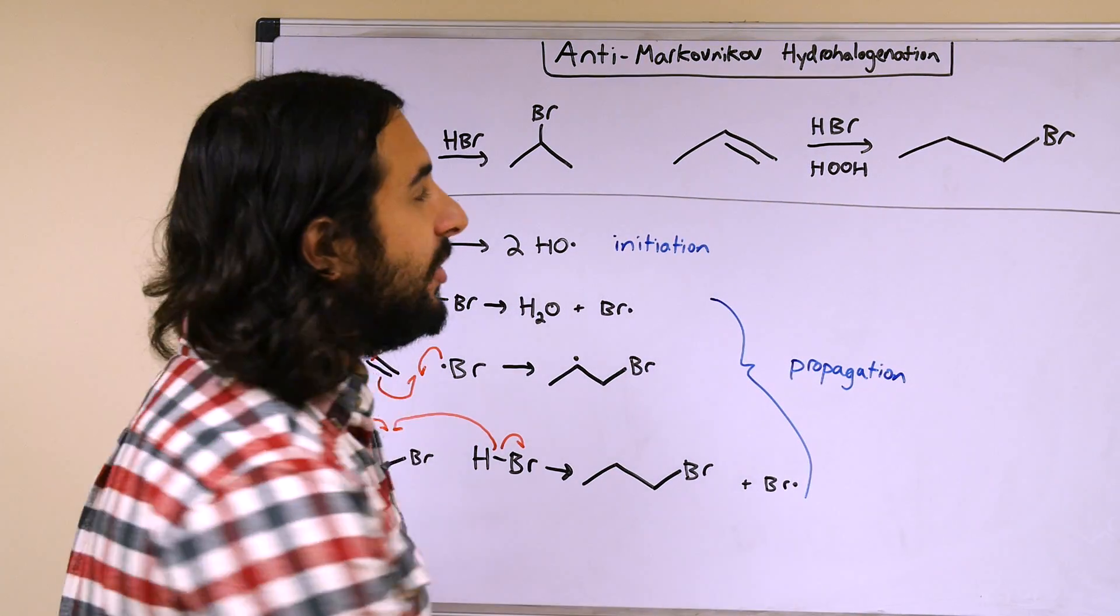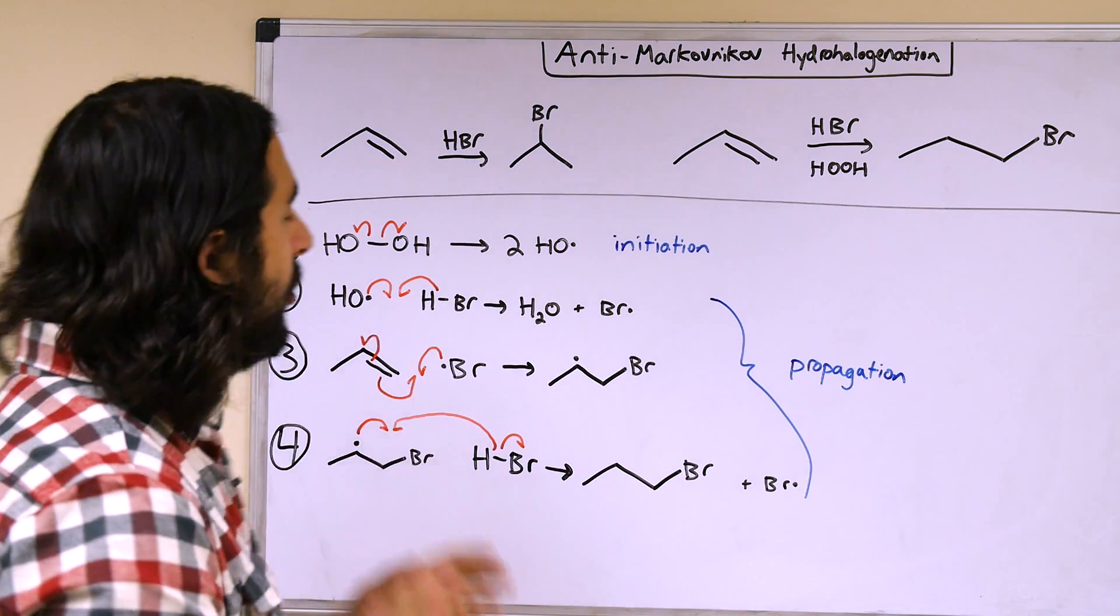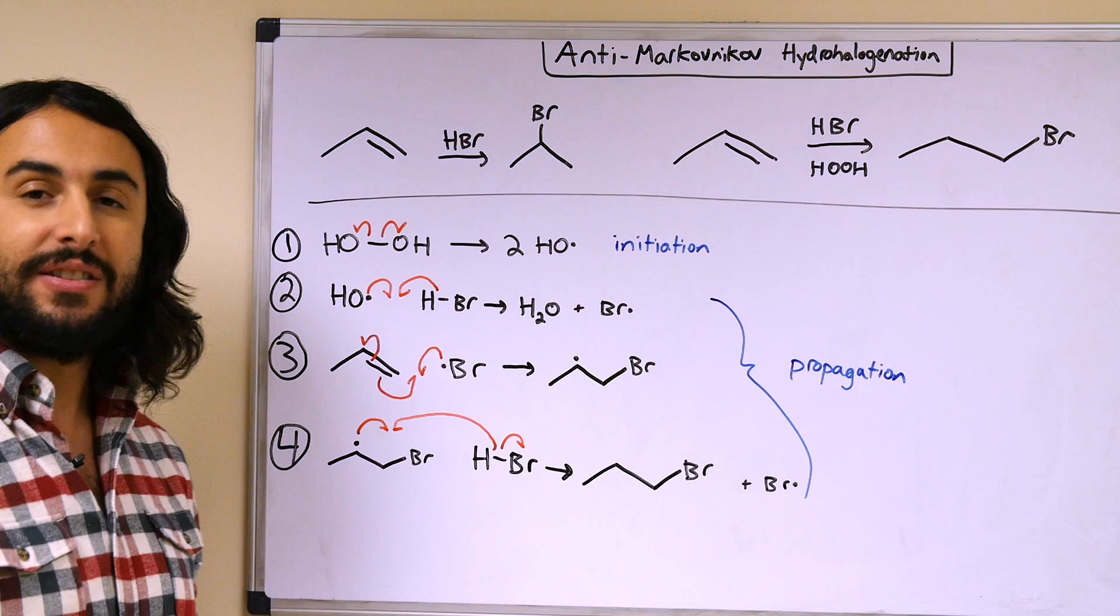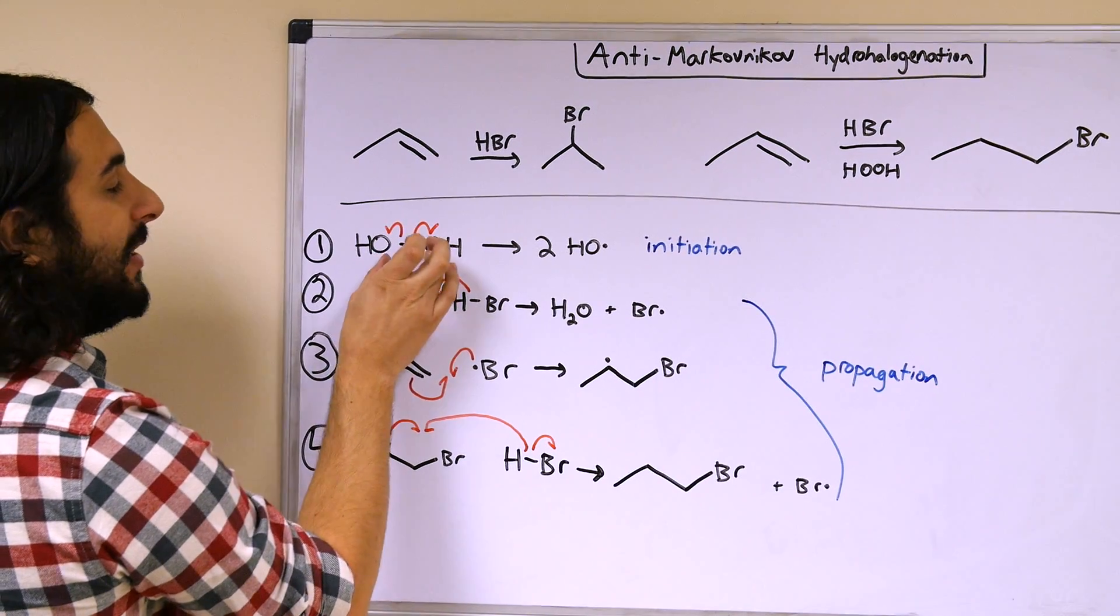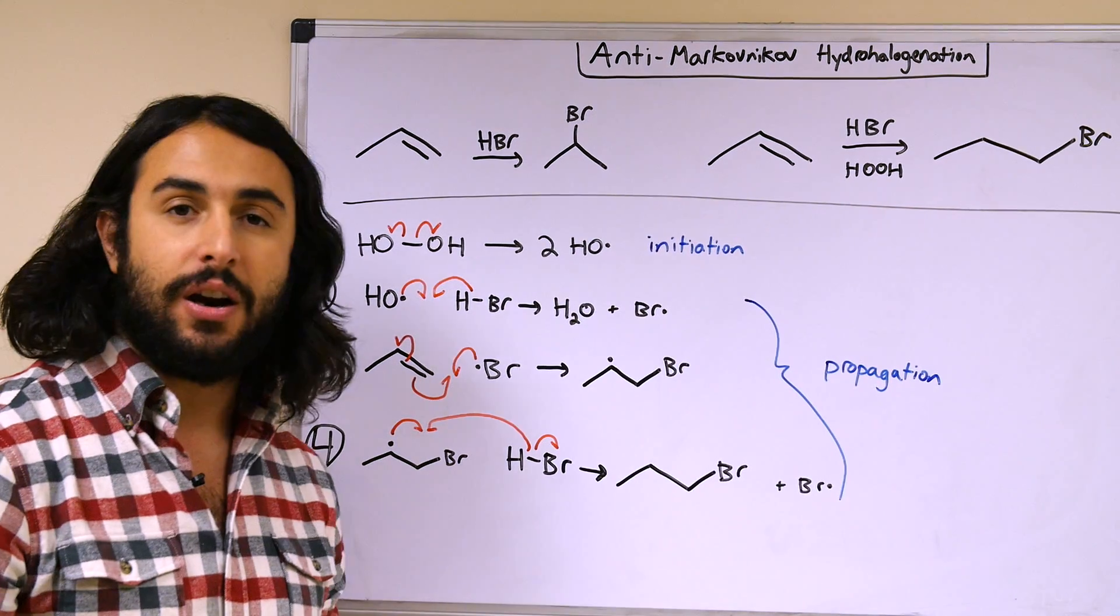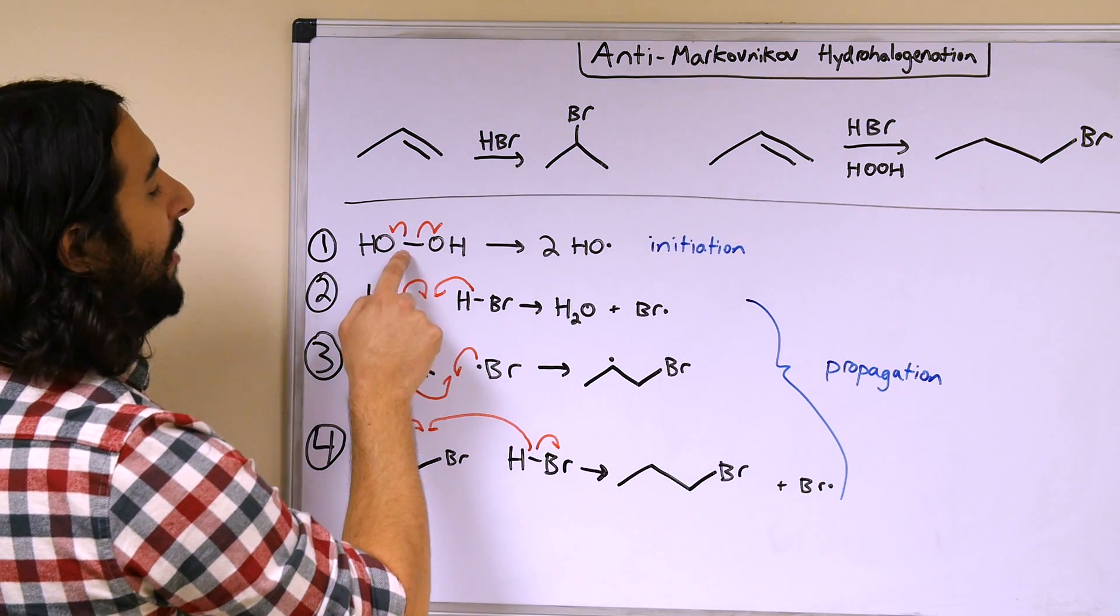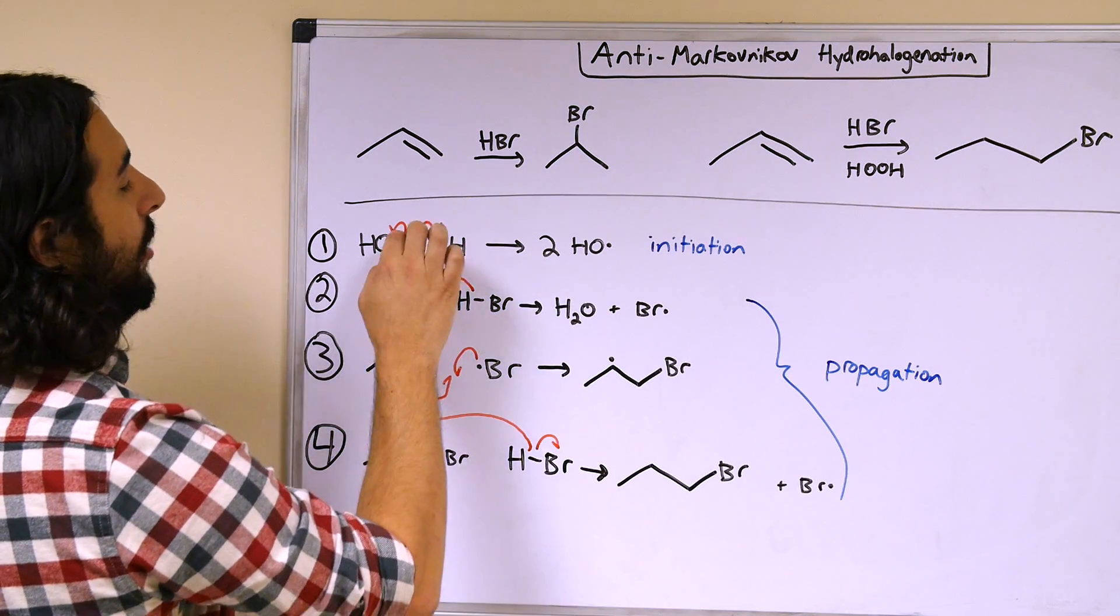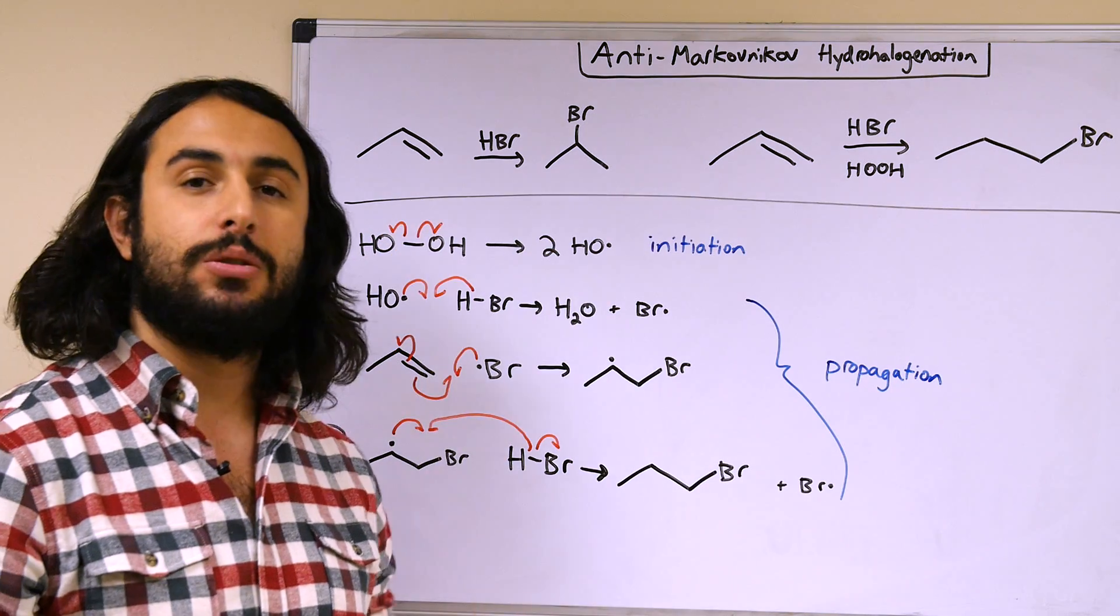It's a free radical reaction and so the peroxides obviously play a very key role in this. So let's take a look. The initiation step is going to be provided by the peroxides. And so remember when we talked about oxygen-oxygen covalent bonds as ones that are able to undergo homolytic bond cleavage, that's the initiation step. So we have this oxygen-oxygen covalent bond undergoing homolysis and then we get two hydroxyl radicals.